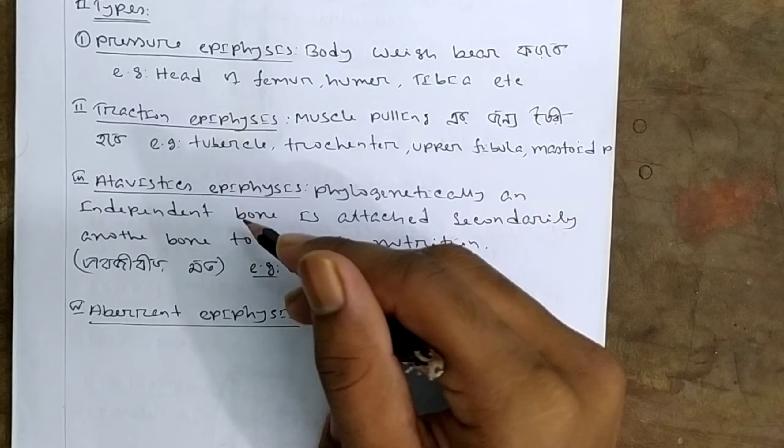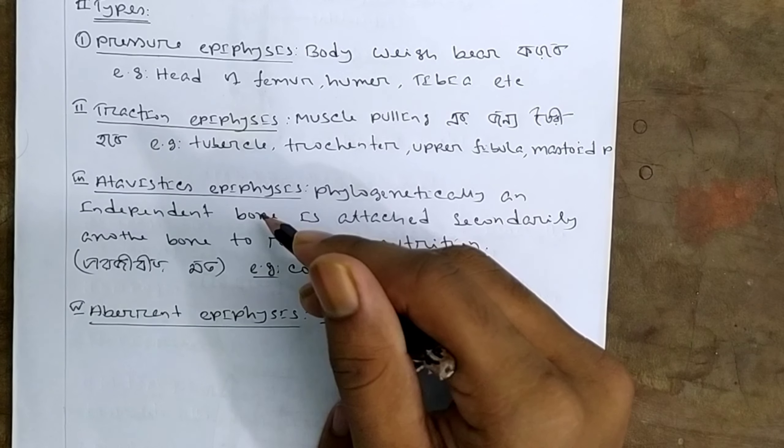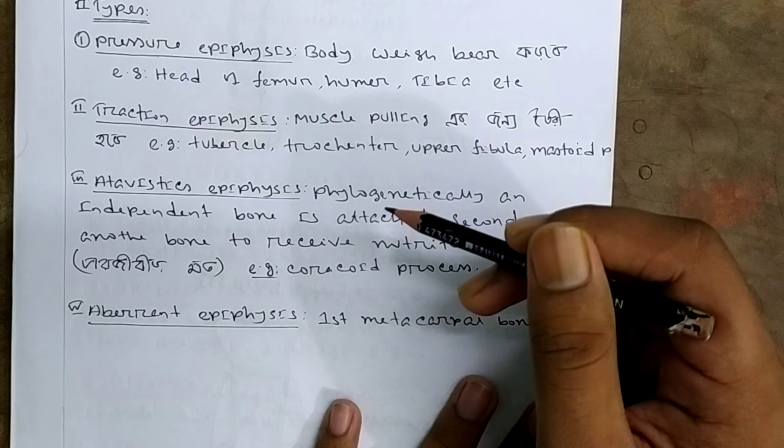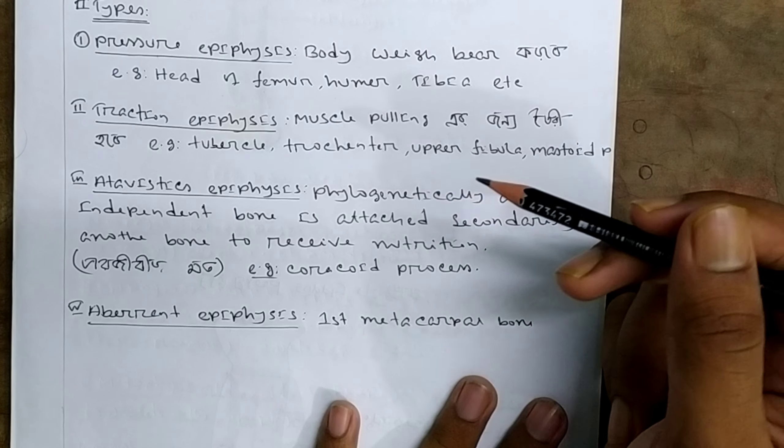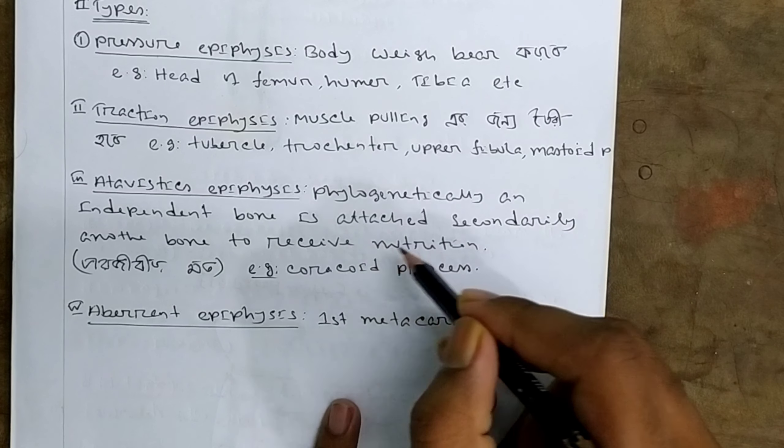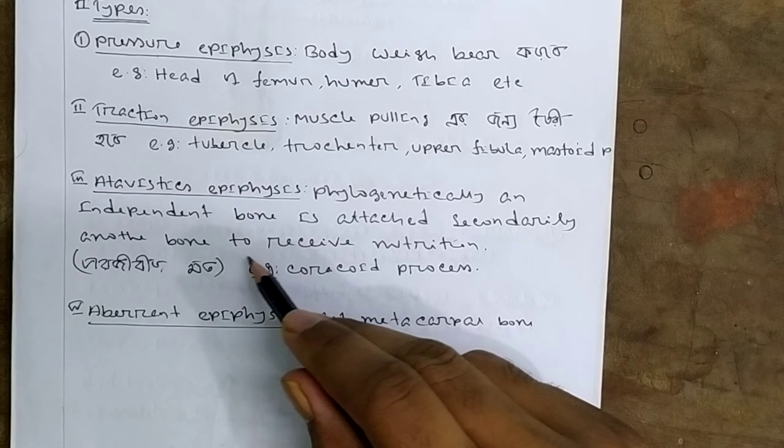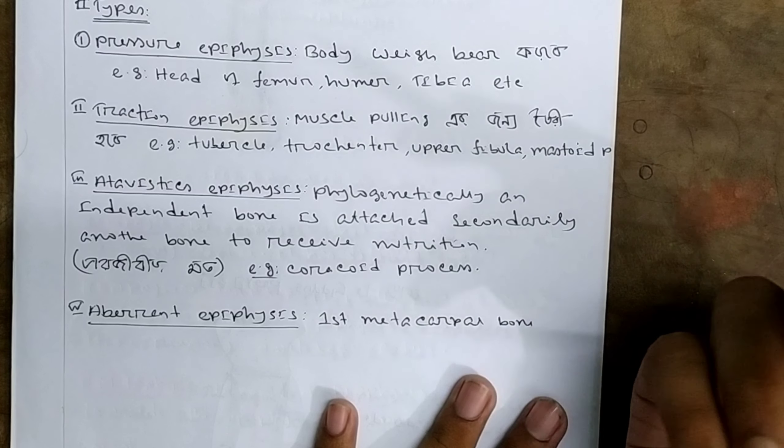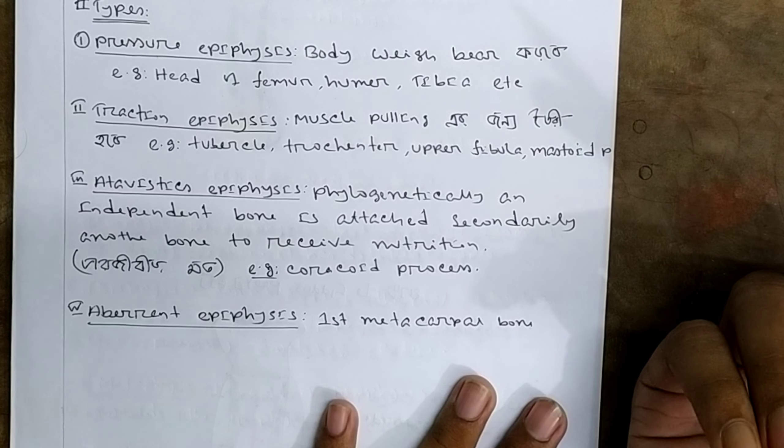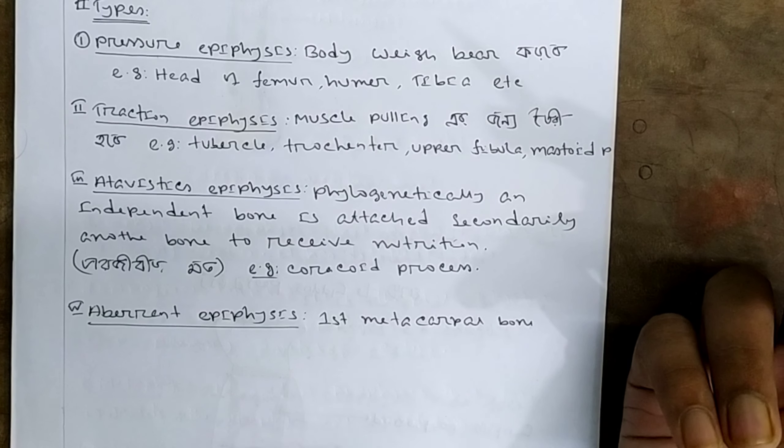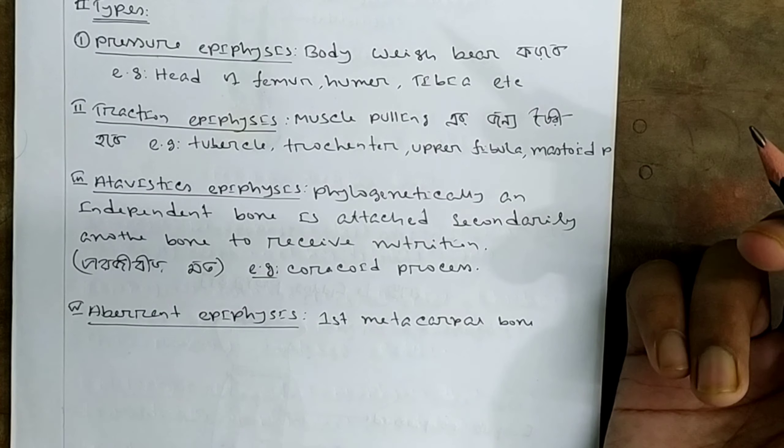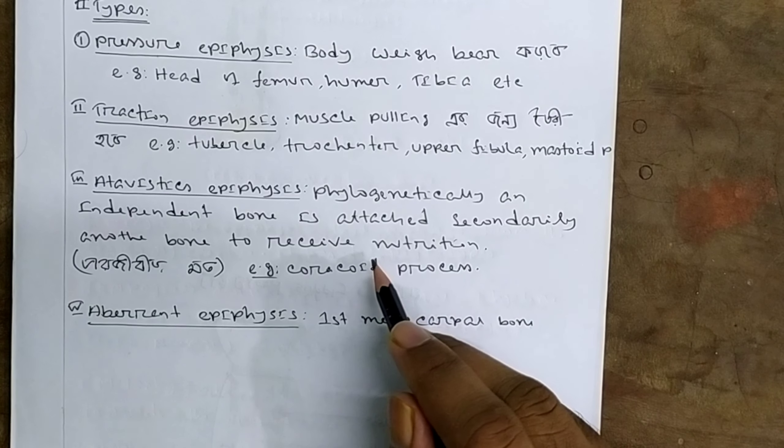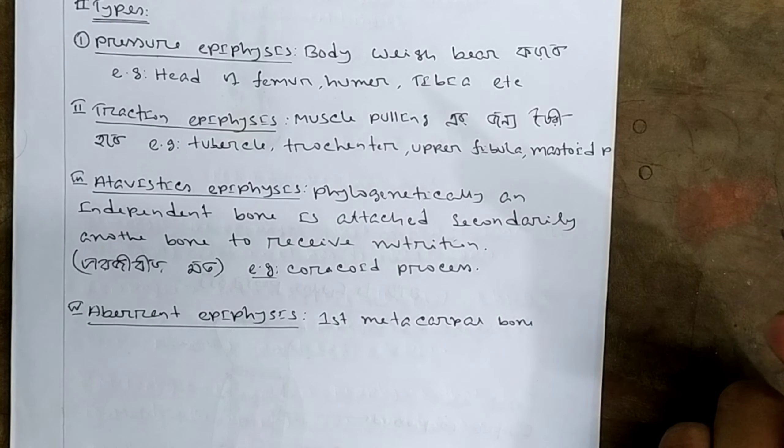Atabistic epiphysis is a phylogenetic bone, an independent bone. This bone was originally independent but later attached with the secondary bone to receive nutrition. This bone depends on another bone for nutrition.